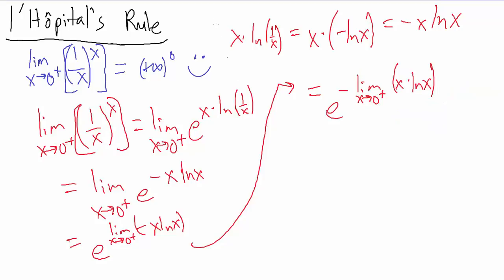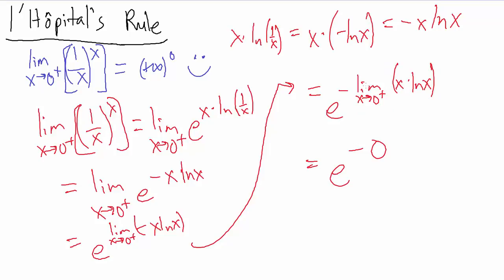Going back to the original problem, this becomes e to the negative 0. Negative 0 is just 0, so that's e to the 0, which equals 1. Some details were skipped here but were covered in previous videos — about 6–7 minutes of work — so in the interest of saving time we referred back to those.